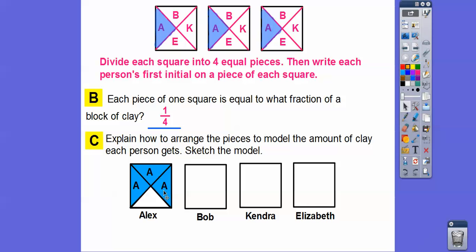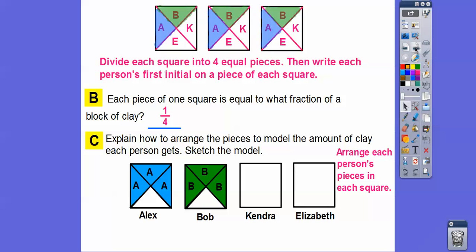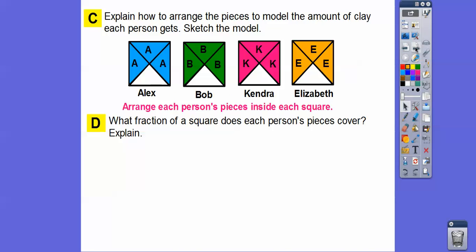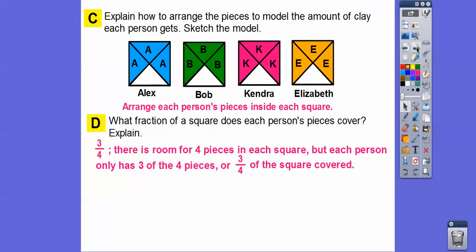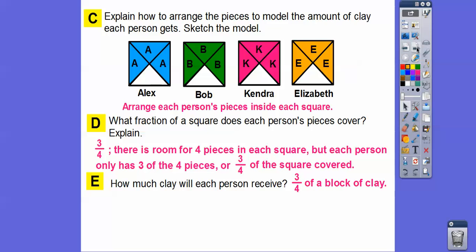We'll do the same thing for Bob — take this piece, this piece, and this piece and put it in that square. We'll arrange each person's pieces in each square. There's Bob, and then we'll do the same for Kendra — she gets three pieces — and Elizabeth also gets three pieces. What fraction of the square does each person's piece cover? Alex has four pieces but only gets three of them, same with Bob, Kendra, and Elizabeth. So each person gets three-fourths of a square. Each person will receive three-fourths of the block of clay.